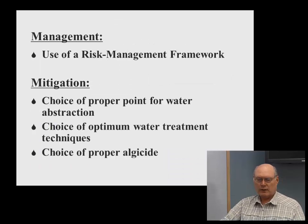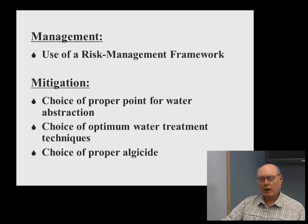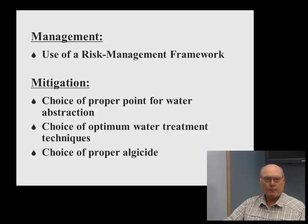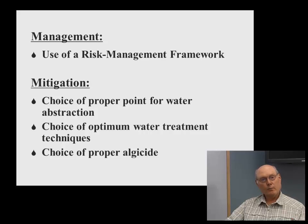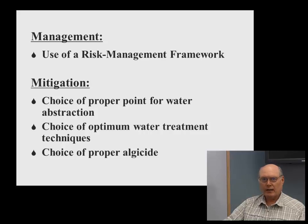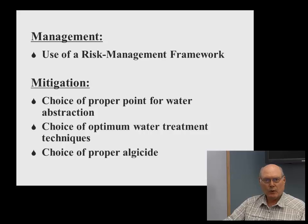Management really means using a risk management framework. Mitigation is choosing your options — hopefully to prevent. That includes things like choosing which water extraction point to avoid taking in cells and toxins, choosing optimum water treatment techniques, and choosing the right algaecide. But I expand mitigation to what you do before you have a bloom — mitigation really means prevention, not just for your water treatment plant, but so you don't have those blooms in the first place.